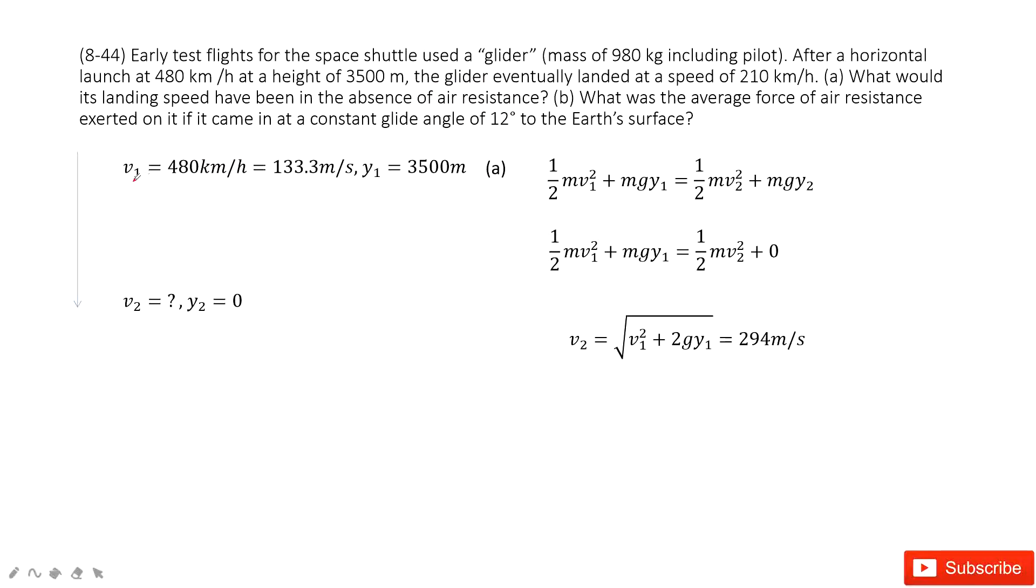The airplane initial position, we just consider vertical. The airplane initial velocity is v1. We can convert it to unit meter per second. The position y1 is given.